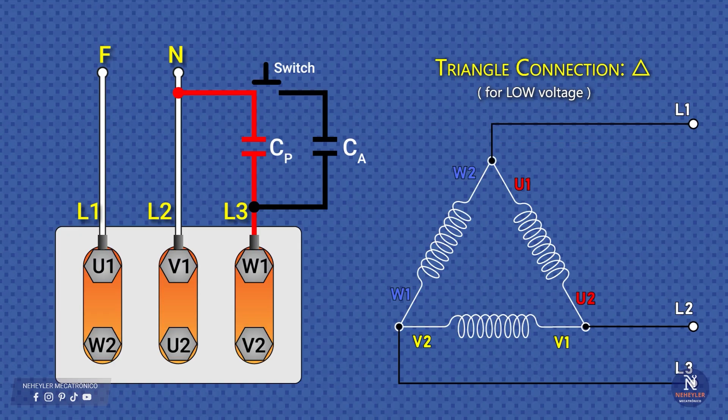In delta connection, the end of each winding is joined with the beginning of the next. U1 with W2, V1 with U2, and W1 with V2. The supply is applied at the three corners, and at one of these the capacitors must be connected to the single-phase line. This connection is used for low voltage.